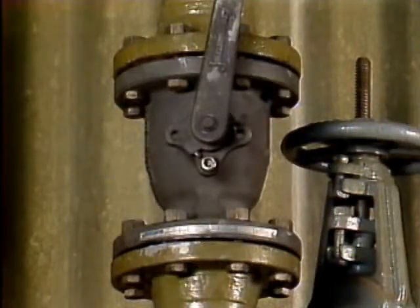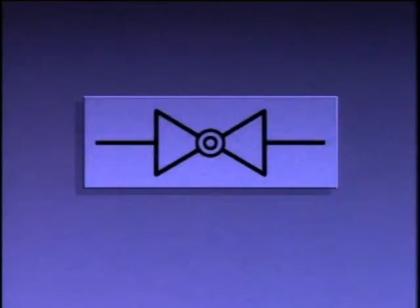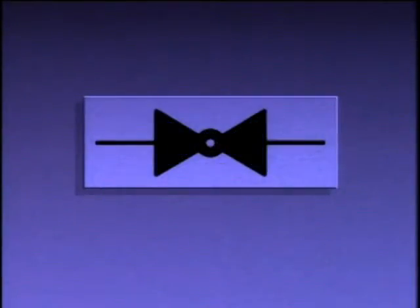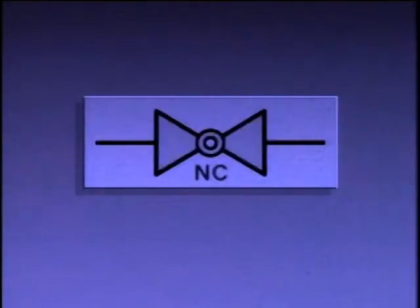The body of a ball valve may be either cylindrical or round in shape. On a piping system diagram, a ball valve symbol has a specific appearance. If the symbol looks open or has the letters NO beside it, the valve is normally open. If the symbol is filled in or has the letters NC beside it, the valve is normally closed.